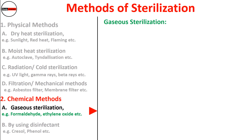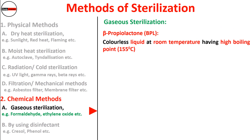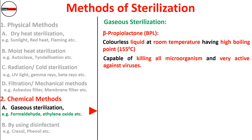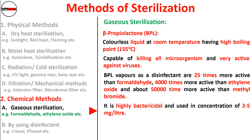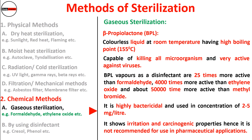Beta-propiolactone (BPL) is a colorless liquid at room temperature with a high boiling point of 155°C. It is capable of killing all microorganisms and is very active against viruses. BPL vapors are 25 times more active than formaldehyde, 4,000 times more active than ethylene oxide, and about 50,000 times more active than methyl bromide. It is highly bactericidal, used at a concentration of 2–5 mg/L. However, it shows irritating and carcinogenic effects and is not recommended for pharmaceutical applications.